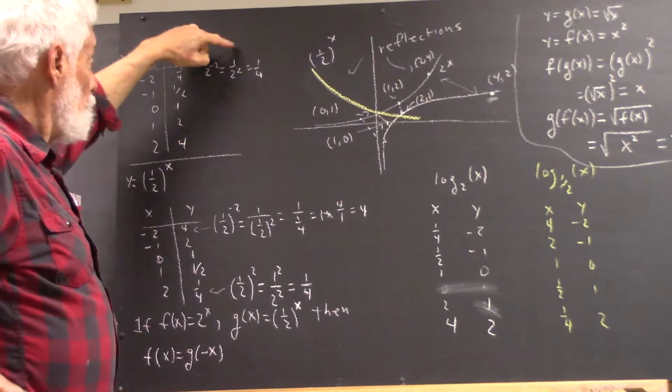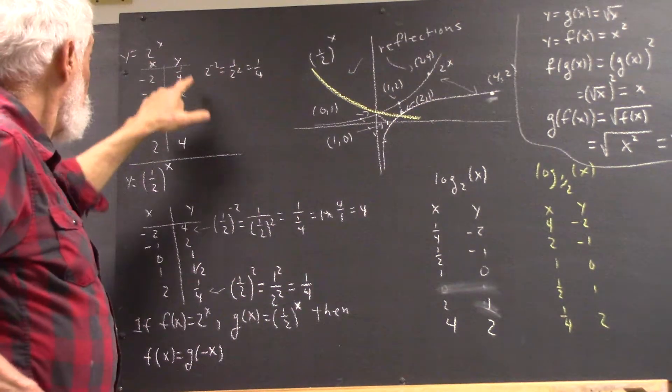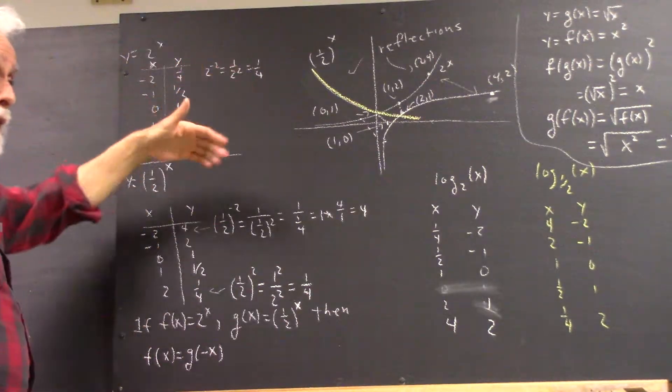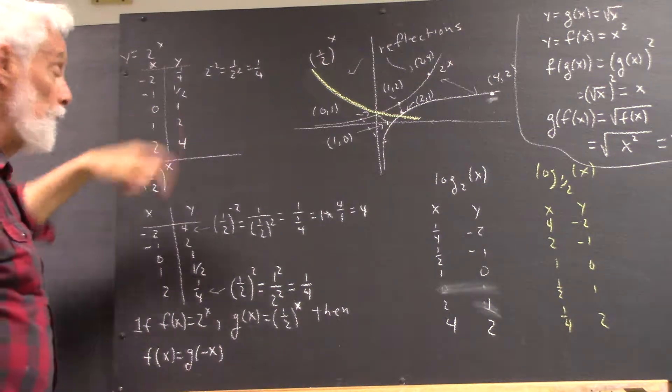Okay, so that's 1 over 2 squared, and of course that's 1 fourth, so that's why you get 1 fourth here. Okay? And 2 to the negative 1 is 1 over 2 to the 1. That's 1 half.